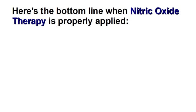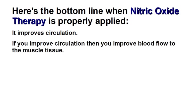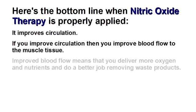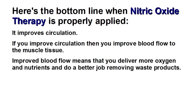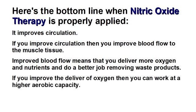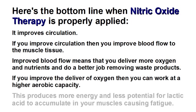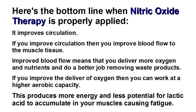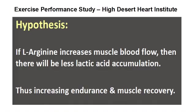Here is the bottom line. When nitric oxide therapy is properly applied, it improves circulation. If you improve circulation, then you improve blood flow to the muscle tissue. Improved blood flow means you are delivering more oxygen and nutrients and doing a better job removing waste products. If you improve the delivery of oxygen, then you can work at a higher aerobic capacity. This produces more energy and less potential for lactic acid to accumulate in your muscles, causing fatigue. This was the working hypothesis for an exercise performance study using the L-arginine pathway for the creation of nitric oxide.